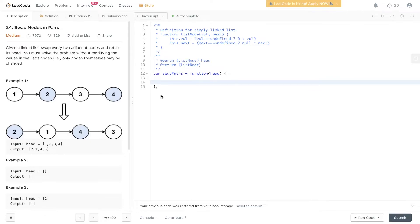Welcome back to Algo.js. Today's question is LeetCode 24, swap nodes in pairs. Given a linked list, swap every two adjacent nodes and return its head. You must solve the problem without modifying the values in the list nodes. Only the nodes themselves may be changed.